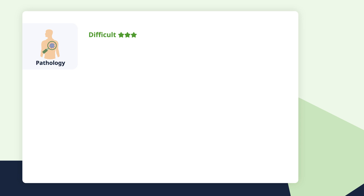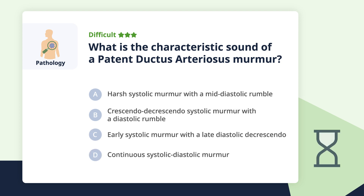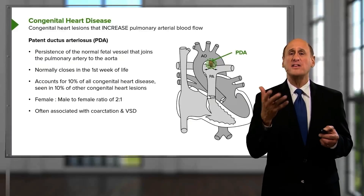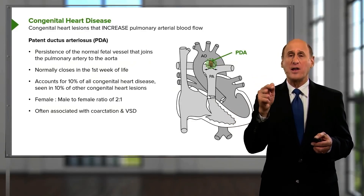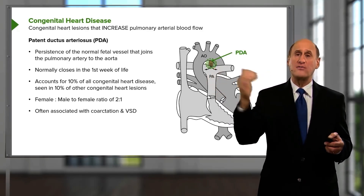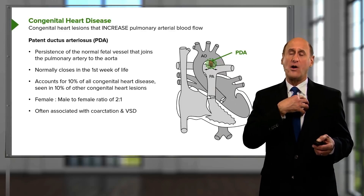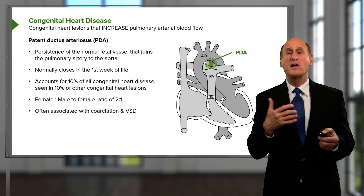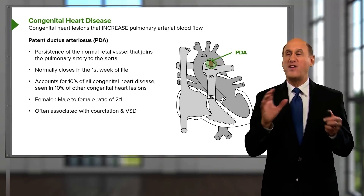Now, can you handle this difficult one? What is the characteristic sound of a patent ductus arteriosus murmur? A murmur associated with a PDA is one of the most interesting in cardiology because aortic pressure is always higher than pulmonary pressure — both during systole and diastole. That means you have shunt flow and turbulent flow in the pulmonary artery throughout both phases. When you listen along the left upper border of the sternum, you hear a continuous murmur that's a little louder in systole — very distinctive.